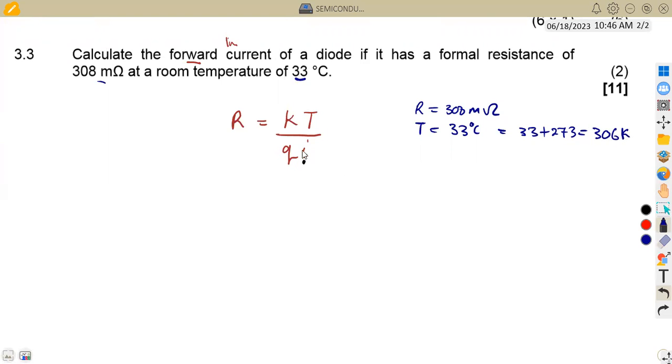So we can make I the subject. We can simply cross multiply. So that means we are going to have R times Q times I, which is equal to KT. So to find I, we are going to divide by this product of R and Q. So if we divide R and Q both sides, we are going to remain with the current, which is our forward current. So our forward current is equal to KT over RQ.